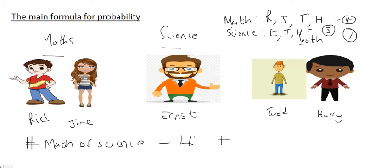Then you add that to all the people who do science, and that would be three people: Ernest, Todd, and Harry. But then you have to be careful, because now we have counted certain people twice. Todd and Harry have just been counted twice, because they were counted for maths and they were also counted for science.